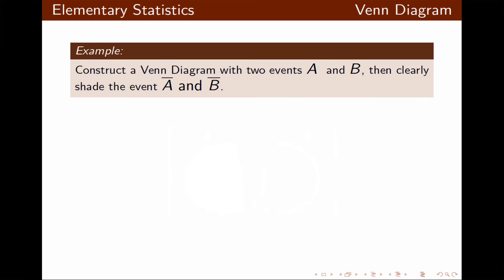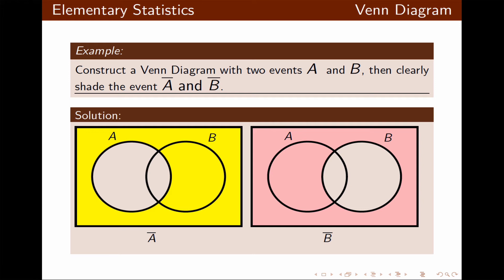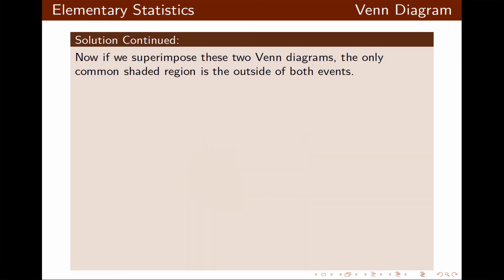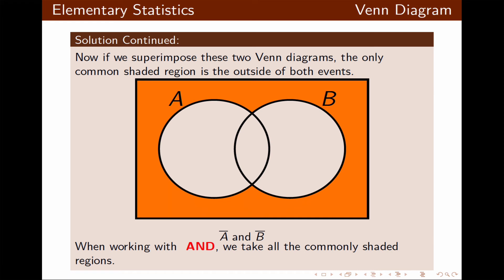Now let's do the same problem but this time for not A and not B. We do the Venn diagram for not A — shading outside of A — and for not B — shading outside of B. When we superimpose these two Venn diagrams, only the outside of both circles is commonly shaded. Since we're working with and, we only take the commonly shaded regions, which in this case is outside of the circles.